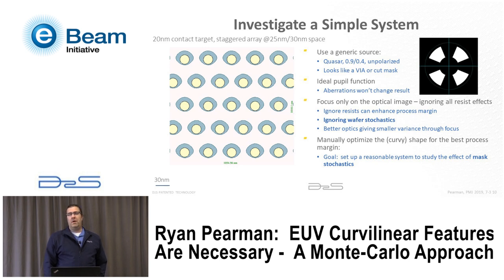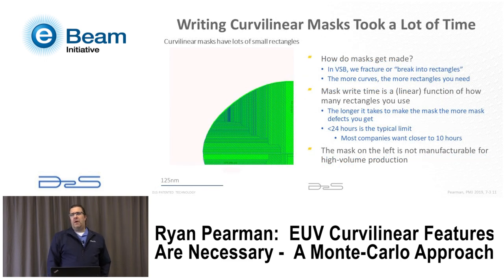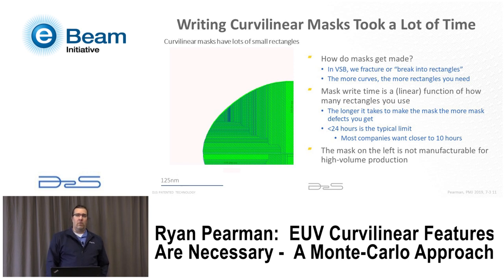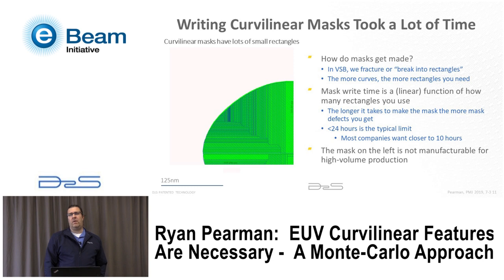Historically in variable shaped beam electron beam systems, in order to print any shape you had to break it apart into rectangles. An oval doesn't look like a rectangle, so you need to break it into many small rectangles. This process is called fracturing, and the time it takes to make a mask is basically directly proportional to the number of rectangles — or shots. Each shot is written one at a time, so a lot of shots means a lot of write time. There's about a 24-hour limit on write time before you start getting defects, and most mask shops try to keep to about a 10-hour limit.